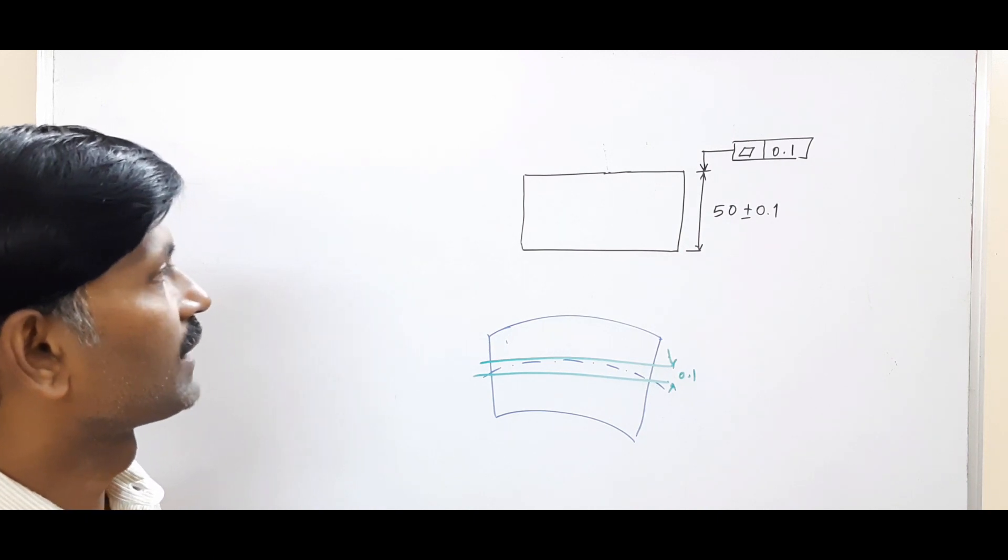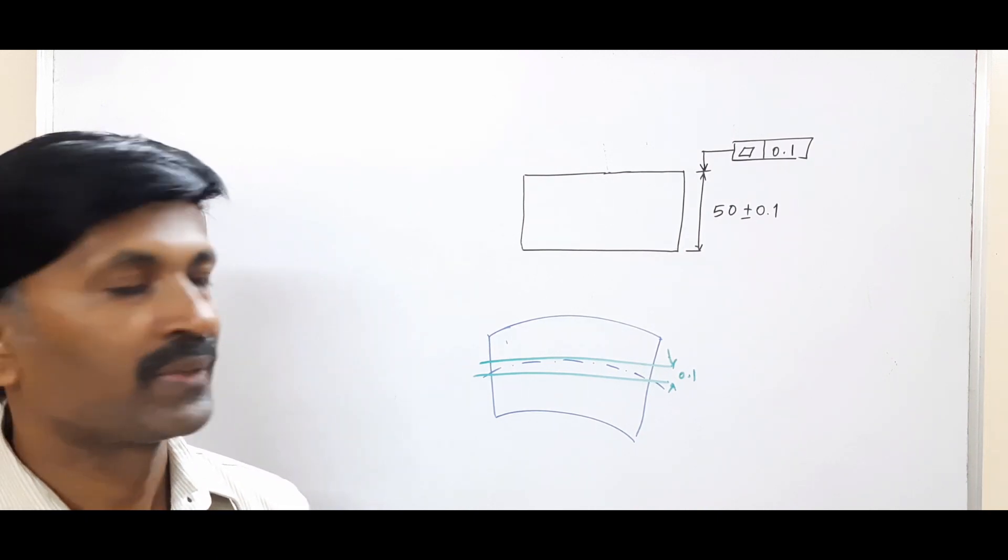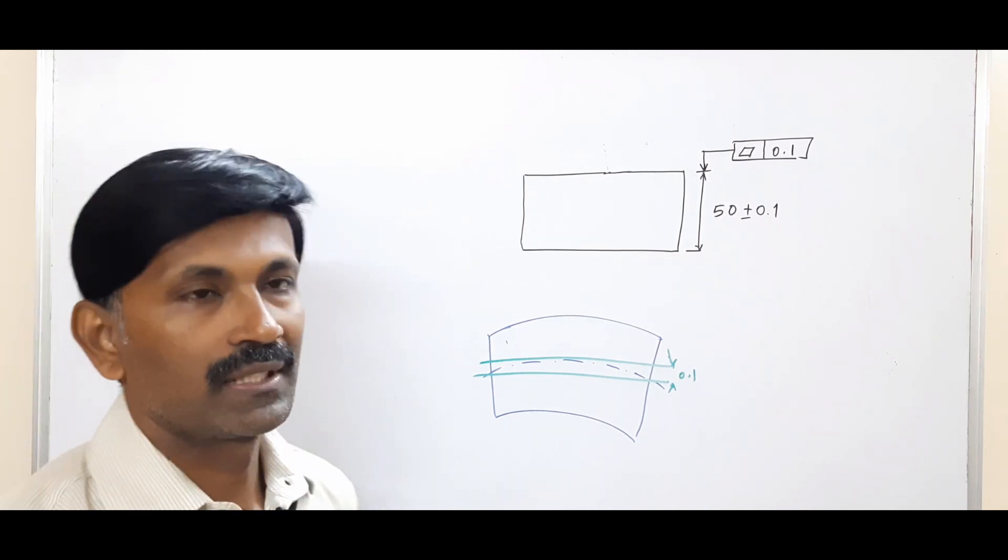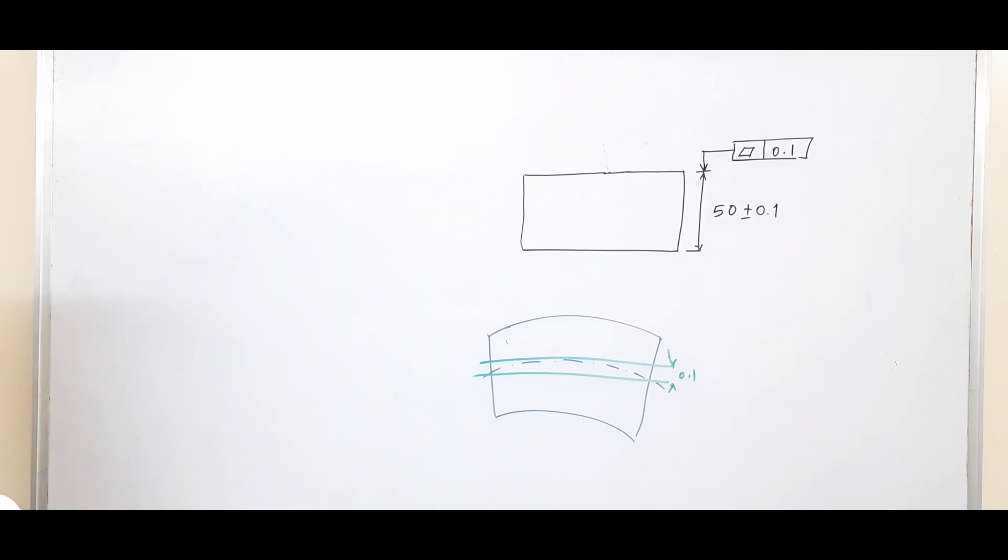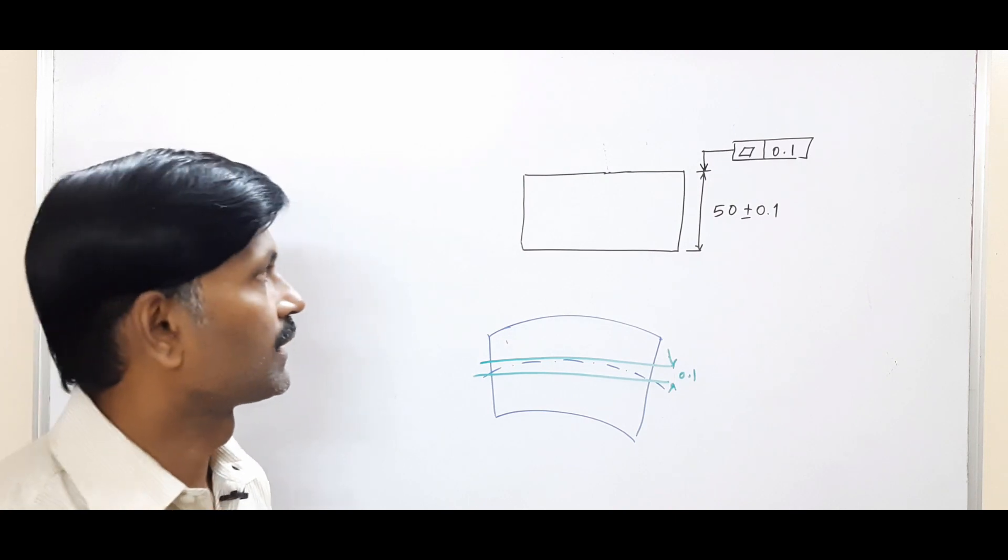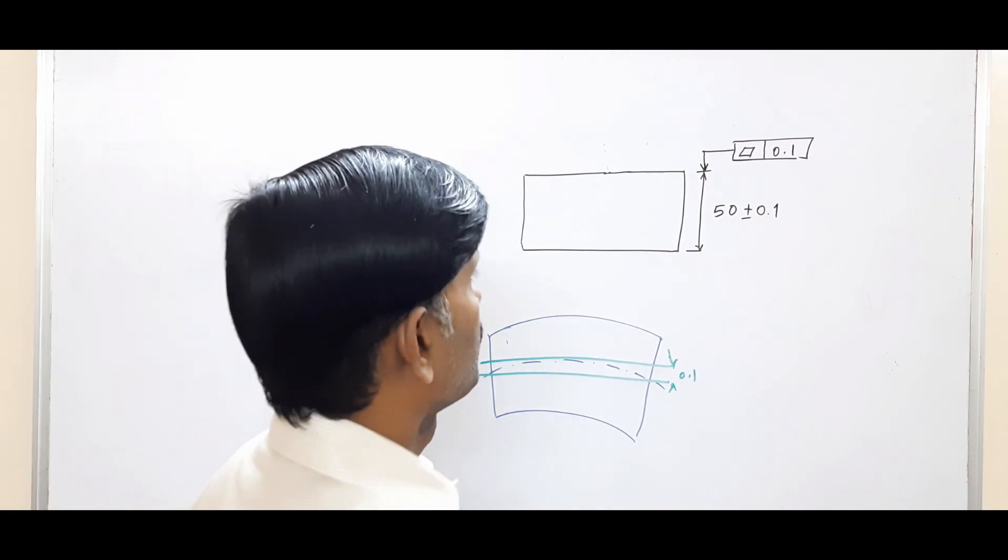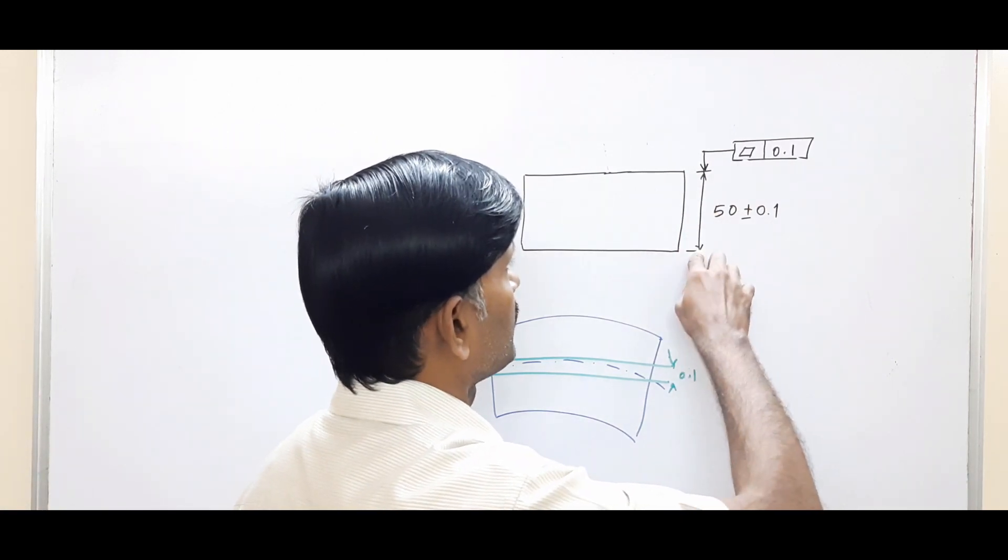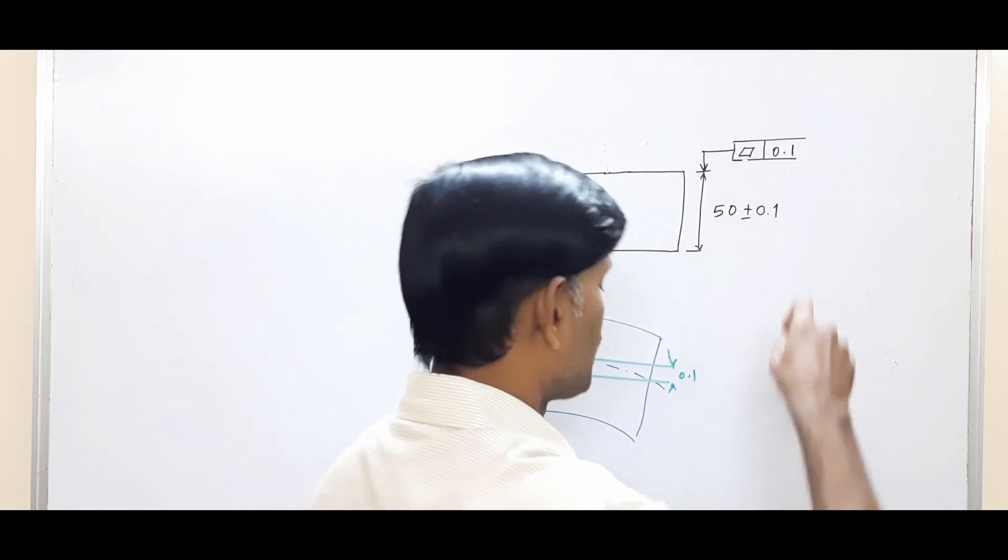This is controlling flatness of center plane. This was added from ASME Y14.5 2009 only - previously it was not available. Since we are applying flatness to a feature of size, here also we can apply material condition modifiers, either maximum material condition modifier or least material condition modifier.